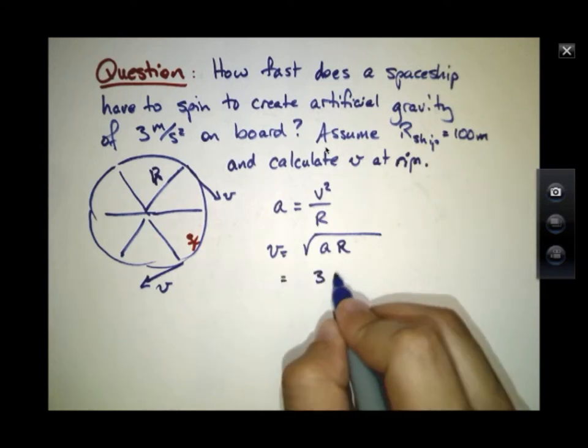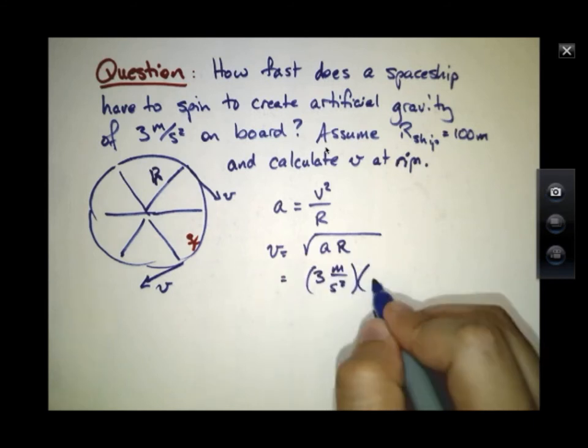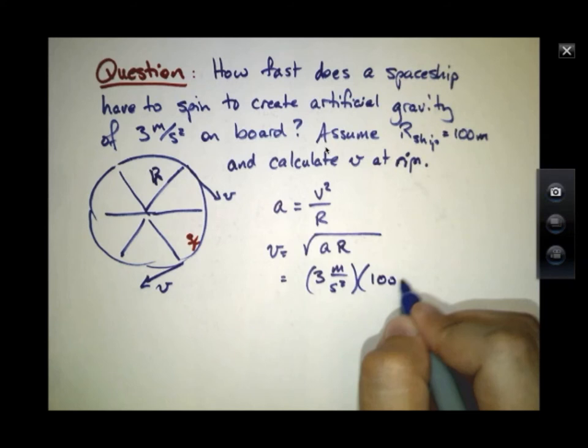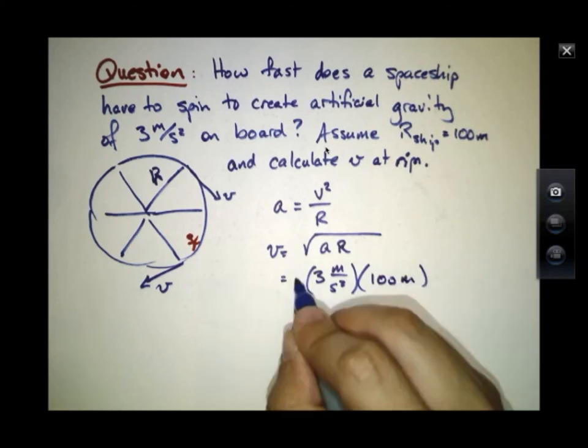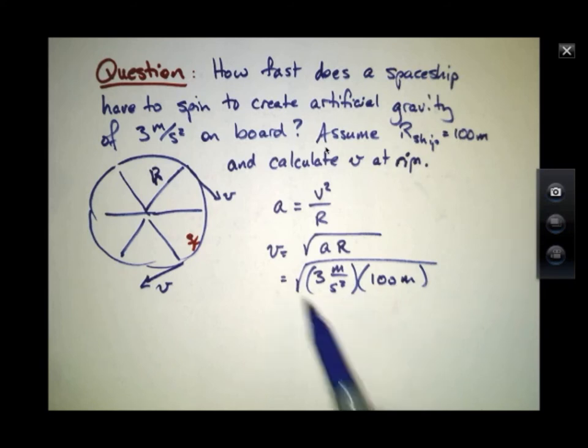If we put in 3 meters per second squared and a radius of 100 meters, notice that I'll have meters times meters, which is meters squared, divided by second squared, and it's all inside of the square root. So the answer I'll get here does have the correct units, the units of meters per second.